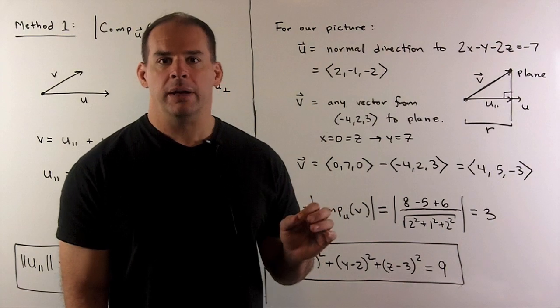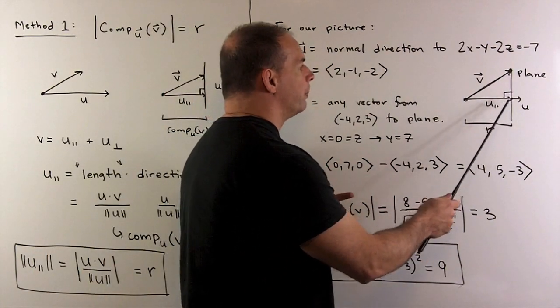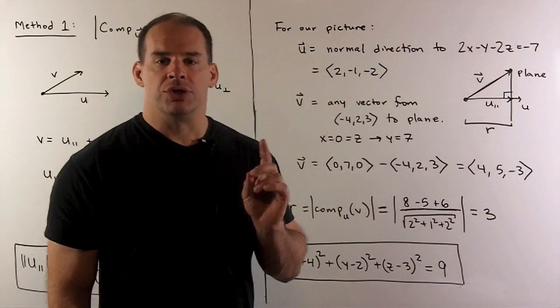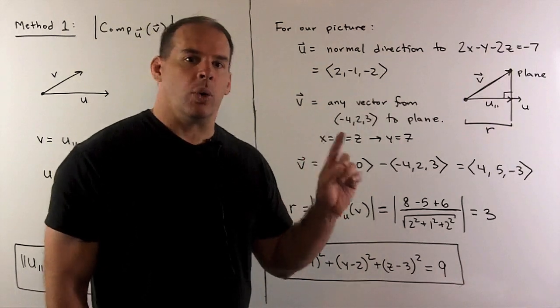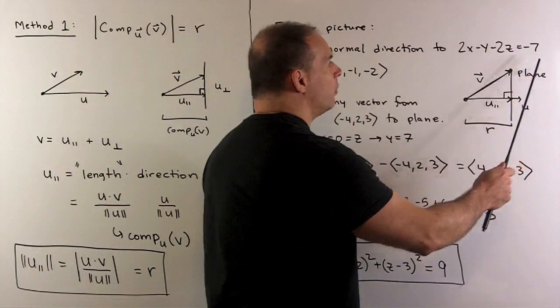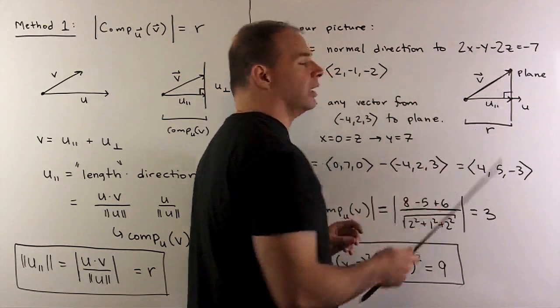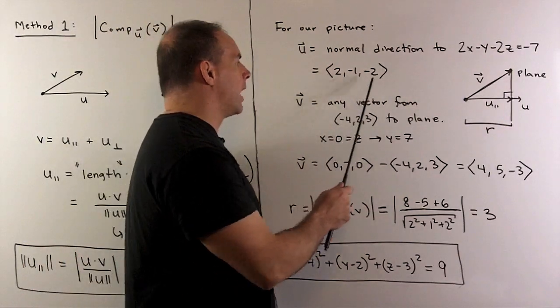Now, how do we find u and v? We look at the picture. For u, I'm looking for a direction that's perpendicular to the plane, so we're looking for a normal direction to the plane. We look at the equation. If our equation's in this form, we get a normal direction by just peeling off the coefficients of x, y, and z. So we'll use u = (2, -1, -2).